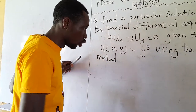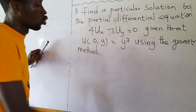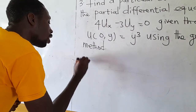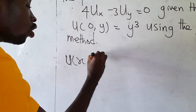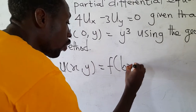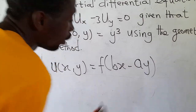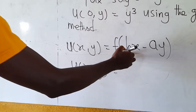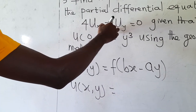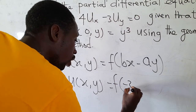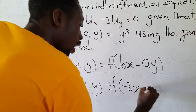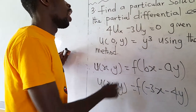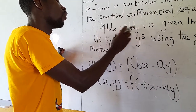Since the question specifies the geometric method, we identify A and B. The general solution is U(x, y) equal to F of (Bx minus Ay). Here B equals negative 3 and A equals 4. So U(x, y) equals F of (negative 3x minus 4y). This becomes the general solution to our constant coefficient partial differential equation.